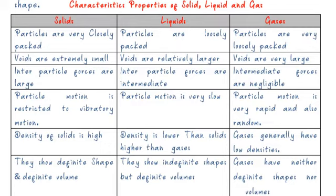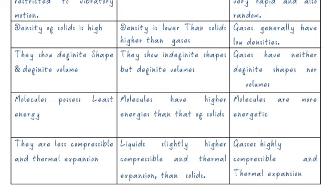Particle motion is restricted to vibratory motion in solids, very slow in liquids, and very rapid and random in gases. Density of solids is high, lower than solids but higher than gases in liquids, and gases generally have low densities. Solids show definite shape and definite volume; liquids show definite volume but not definite shape; gases show neither definite shape nor definite volume.